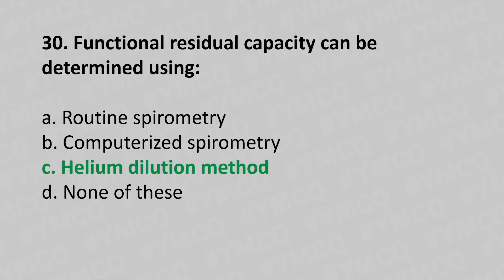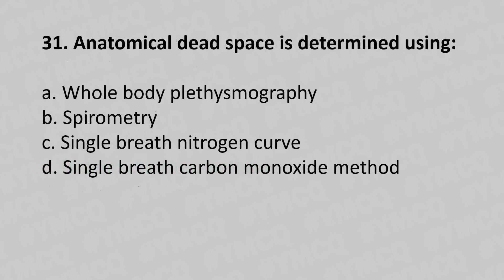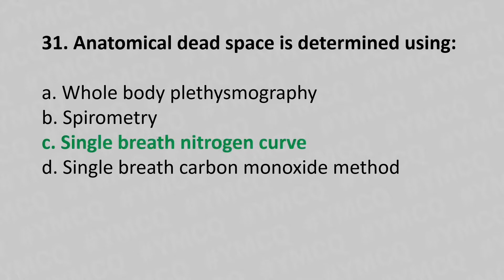Now let's move to question number 31. Anatomical dead space is determined using. Option A: Whole body plethysmography. Option B: Spirometry. Option C: Single breath nitrogen curve. Option D: Single breath carbon monoxide method. And the answer is Option C, Single breath nitrogen curve.